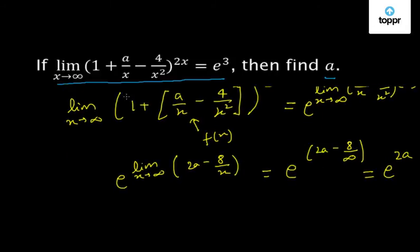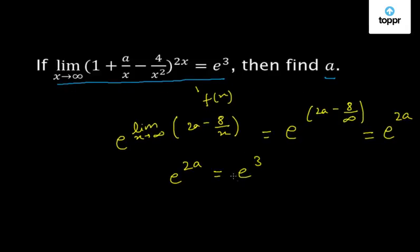Now, we know that this limit is equal to e³. This means that e^(2a) = e³. If we equate the exponents of e from both sides, we get 2a = 3. This means that a = 3/2, so this is our answer.